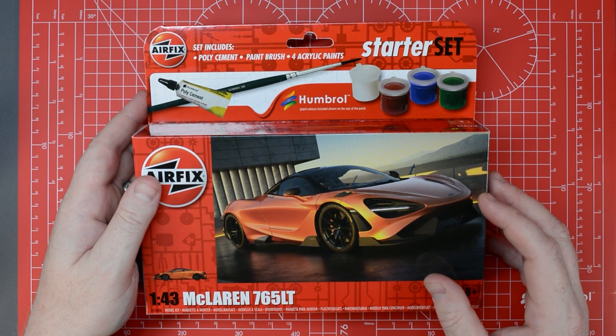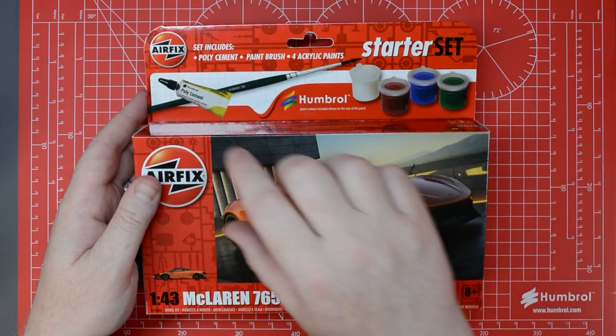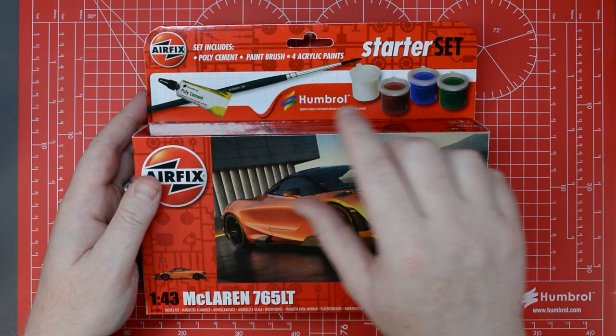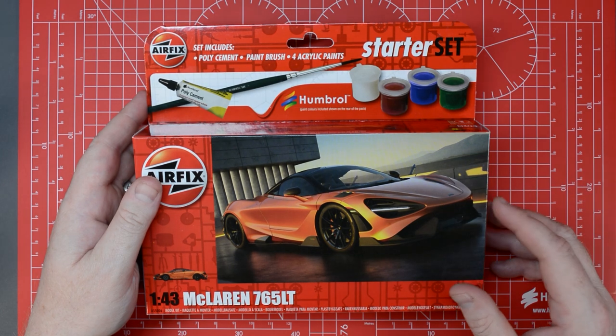Typically because it's a starter set, you not only get the model but you also get the poly cement, the paintbrush and the acrylic paints to paint the kit.